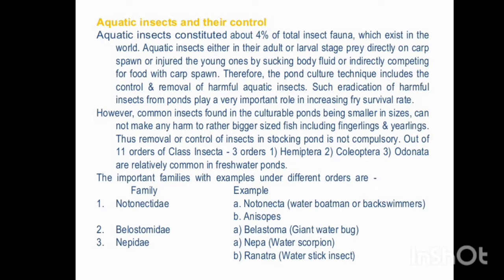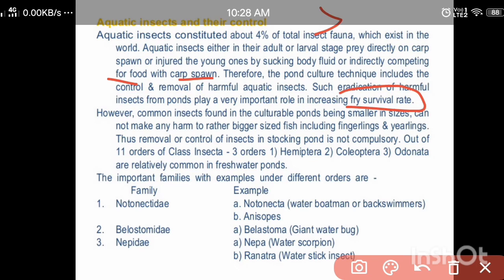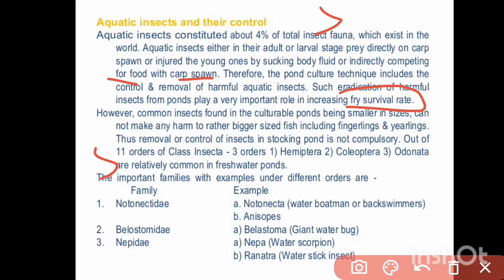These aquatic insects directly prey on our spawns, competing for food with the carp. Therefore, the spawn culture technique includes removal and control of harmful aquatic insects. Eradication of harmful insects from the pond plays a very important role in increasing fry survival rate, so we need to eradicate insects to protect the spawn stages.